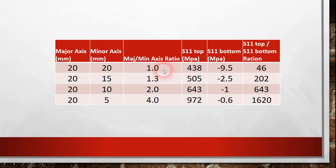And when we increase the major to minor axis ratio to 1.3, this ratio will be 202. So you can see that by just reducing the minor axis by 5 millimeters only, we will have a jump in this ratio to be 4 times the first one.